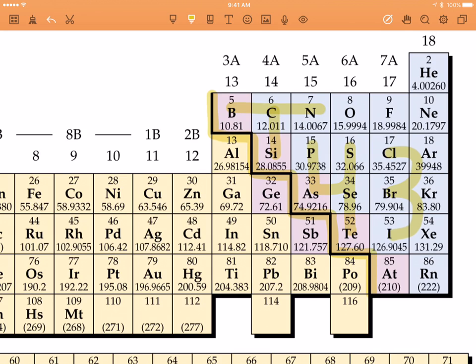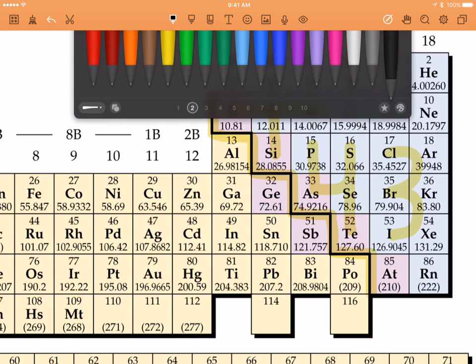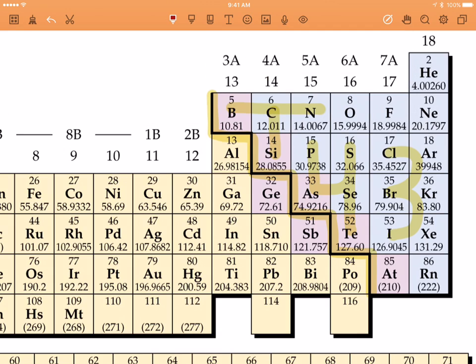You'll notice that boron, carbon, nitrogen, and silicon, all part of that T, are all going to form polyatomic anions with three oxygens. Three oxygens, so I'm going to label them all with three oxygens.